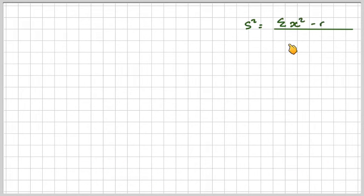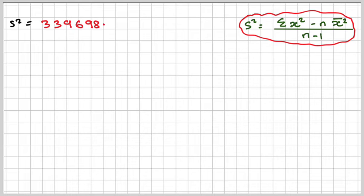So it will be this formula: sigma x squared minus n times x bar squared over n minus 1. So that will be 339,698.15, that we get that from the data given in the question, minus 12 times our mean that we just calculated squared.